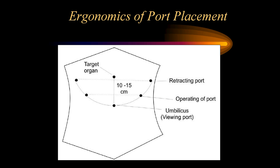When placing ports, they should ideally be around 10 to 15 centimeters away from the target organ, arranged in a circular fashion. The optic port should be positioned first, with the operating or retracting ports at least 4 to 5 finger-breadths away. Like the boundary line in cricket, they should all be in the periphery of a circle.